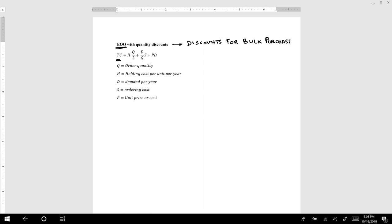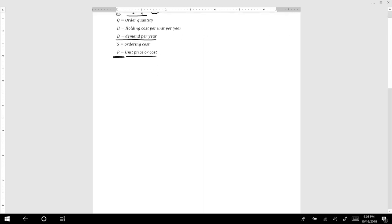If you see the formula, the total cost expression HQ over 2 plus D over Q times S is the same as our basic EOQ model. However, we will add a new component, which is PD. P is the unit price or cost, and D is the demand per year. So we will be adding a new component, which is P times D.